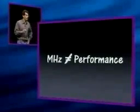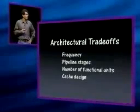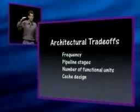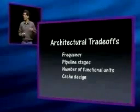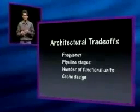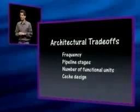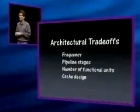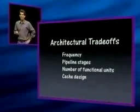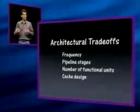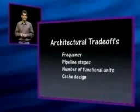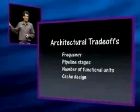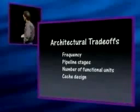To understand this, we have to look at how processors are designed. There are a lot of complicated trade-offs in processor design, and I've picked four of the key architectural trade-offs to look at. Of course there's frequency — we want to run as fast as possible. Then the number of pipeline stages: the more pipeline stages we have, the less work we do every cycle, and so the faster the pipeline can run. Then there's the number of functional units — the more you have, the more parallelism and instructions you can execute every cycle. And finally, cache design: the size of the level 1, level 2, and if you have one, the level 3 cache. All of these factors play into processor performance, not just frequency.